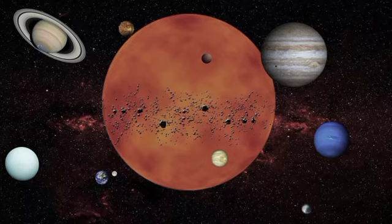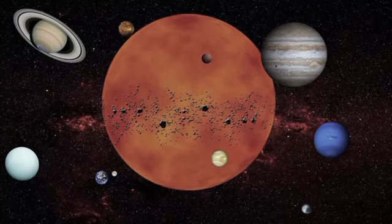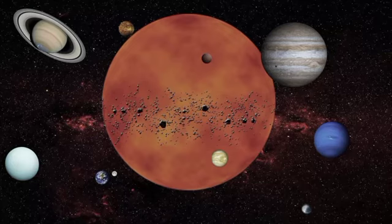Every planet has one and seventh aspect. What does that mean? It basically means every planet will impact the house it is placed and exactly opposite to where it is placed. However, some planets have special aspects. Let's discuss each planet.